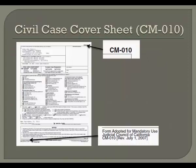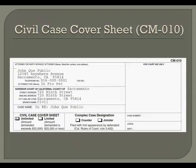The first form you will be completing is the Civil Case Cover Sheet, Form CM-010. The most recent revision was July 1, 2007. Locate the box in the upper left-hand corner labeled Attorney or Party without Attorney. If you are changing your own name, print your full present name, address, and telephone number where indicated, and in the line that says Attorney for, write in pro per.